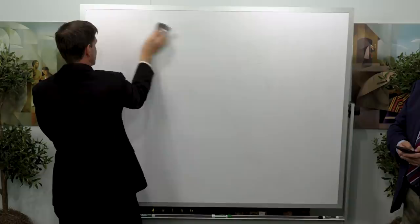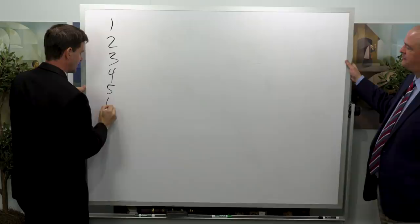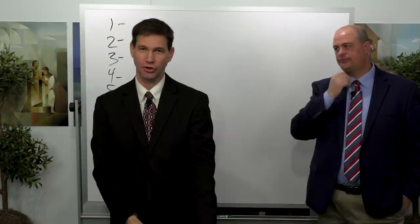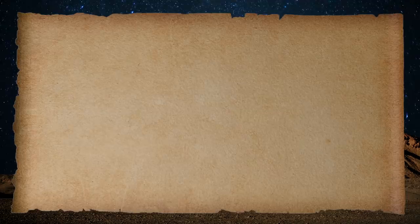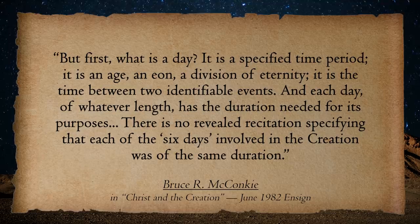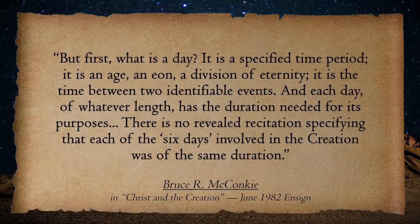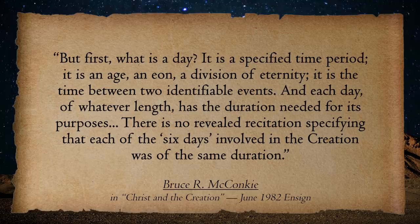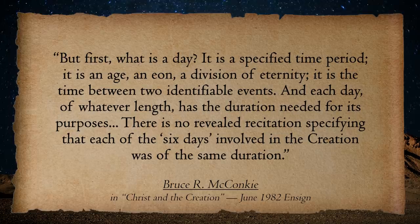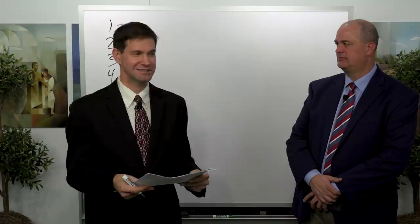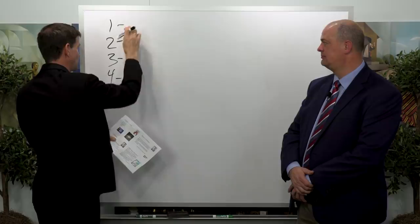As we jump in for the different days that are listed, it's important to note that we use the word 'day' to denote a 24-hour passage of time today. Elder Bruce R. McConkie, back in 1982, said: 'What is a day? It is a specified time period — an age, an eon, a division of eternity. It is the time between two identifiable events, and each day of whatever length has the duration needed for its purposes. There is no revealed recitation specifying that each of the six days involved in the creation was of the same duration.' He's saying there's nothing in the record that would say these are equal time markers.